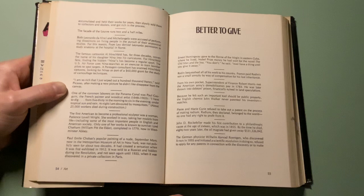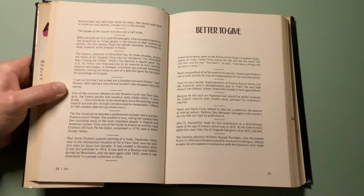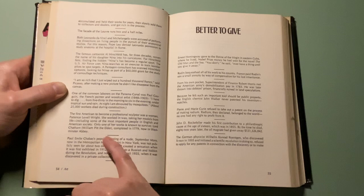The first American to become a professional sculptor was a woman, Patience Lovell Wright. She worked in wax, taking her models from life, including some of the most important people in English and American society. Only one of her works is known to survive: Lord Chatham William Pitt the Elder, completed in 1779, now in Westminster Abbey.